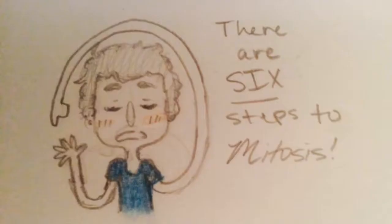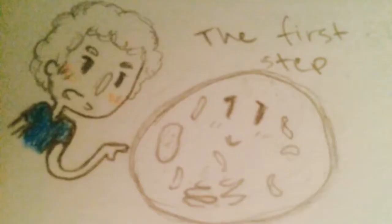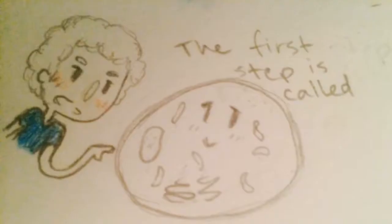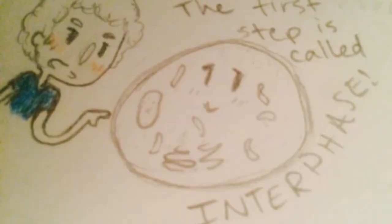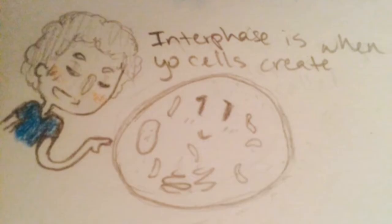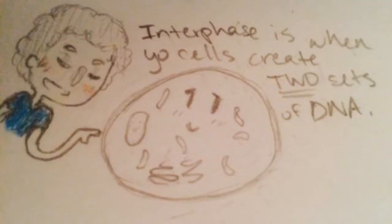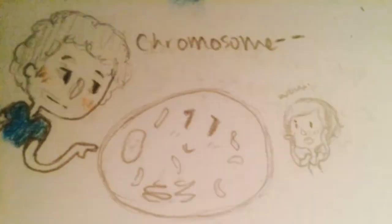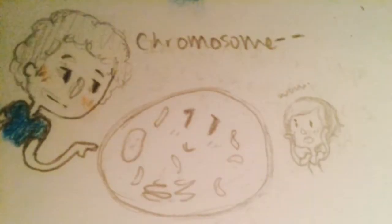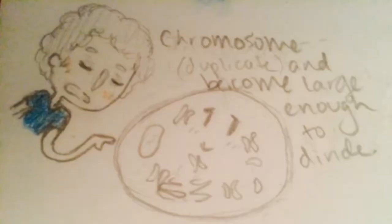There are six steps to mitosis. The first step is called interphase. Interphase is when your cells create two sets of DNA, chromosomes, and become large enough to divide.